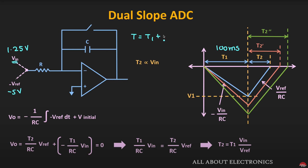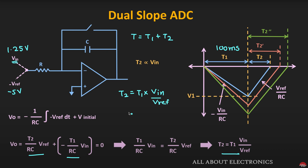The overall conversion time T equals T1 plus T2. Looking at the output of the integrator circuit, the expression simplifies to give us T2 equal to T1 times Vin divided by V-reference. Here T1 is 100 milliseconds, the input voltage is 1.25 volts, and the reference voltage is 5 volts. Simplifying, T2 comes out as 25 milliseconds, and T1 is already equal to 100 milliseconds.